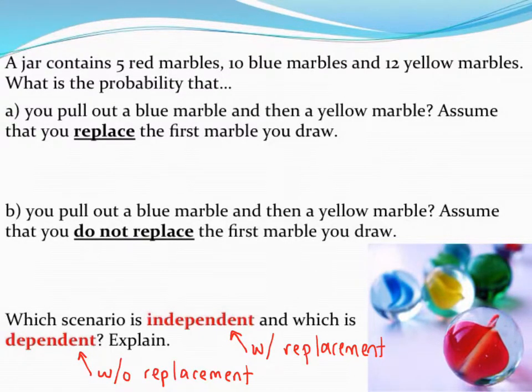Let's take a look at how to find probability of pulling a certain marble out of a jar when we do or do not replace that marble.